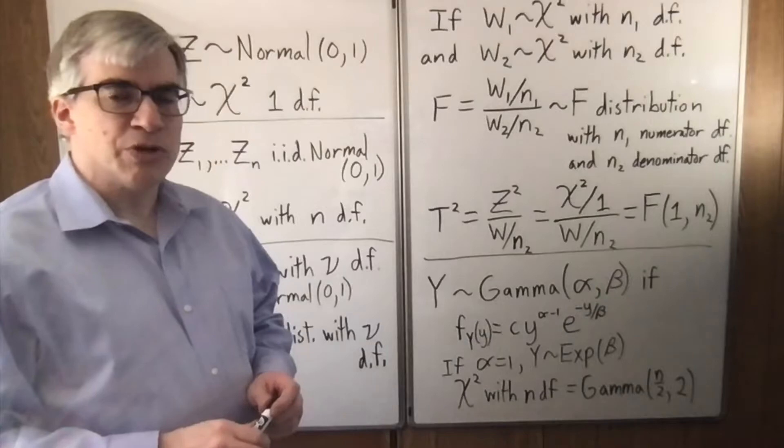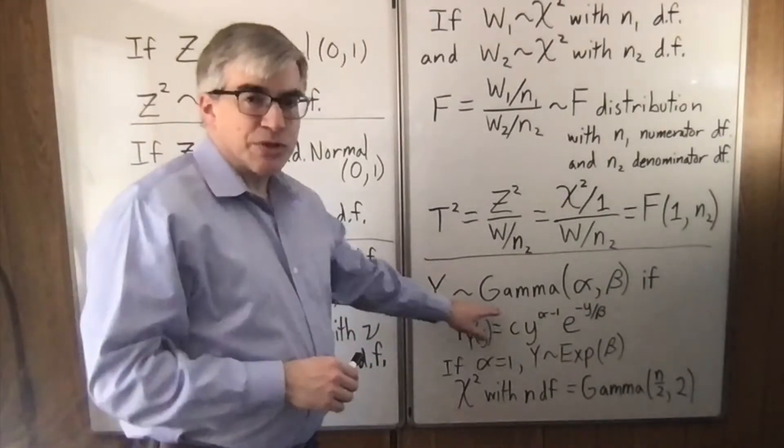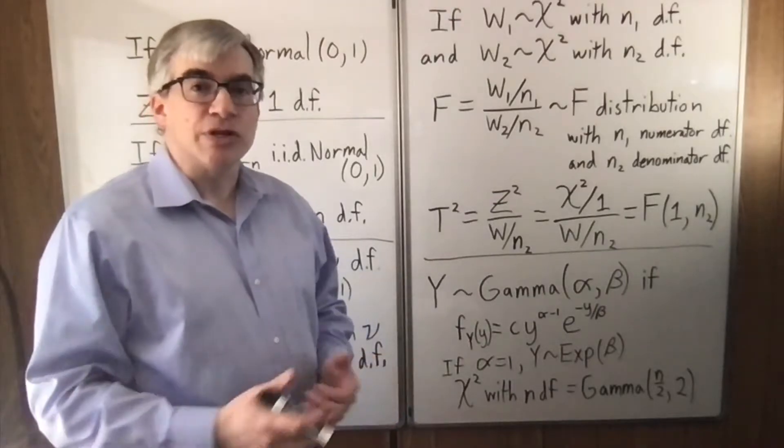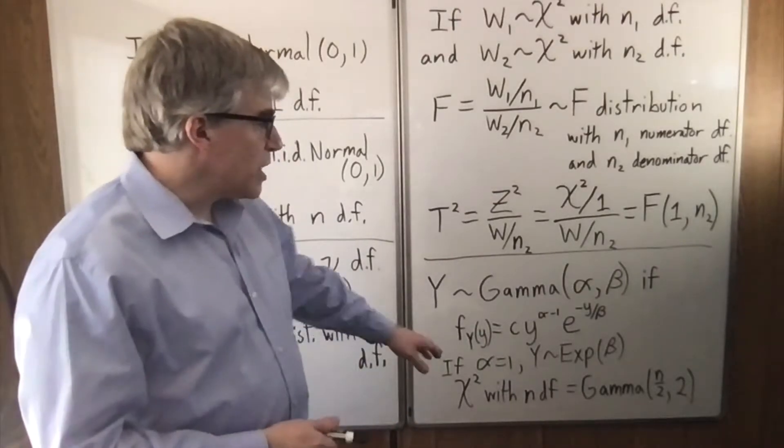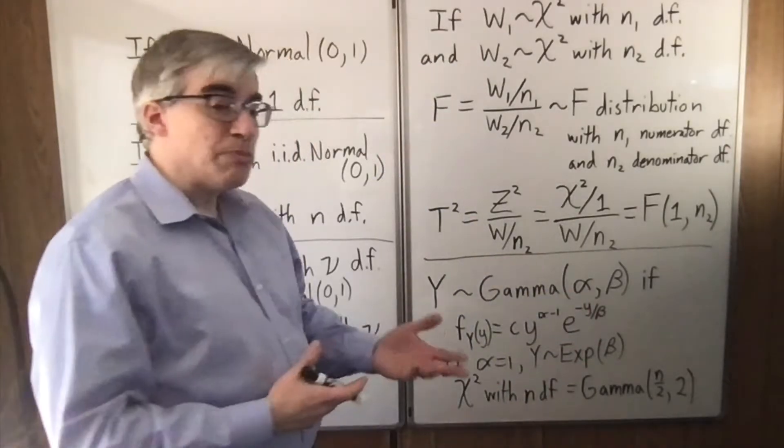Here are some relationships between probability distributions of random variables. A gamma distribution is a generalization of the exponential. An exponential has what we call a scale parameter, but the gamma also has alpha, a shape parameter.